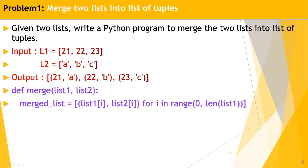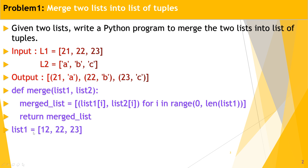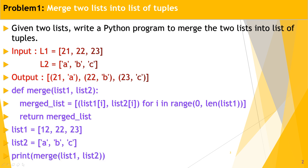Then return the merge list to the caller function. Define list1 and list2, and call the merge function inside a print statement — print(merge(list1, list2)). That is the function call inside the print method.